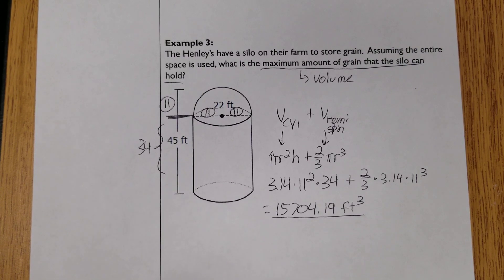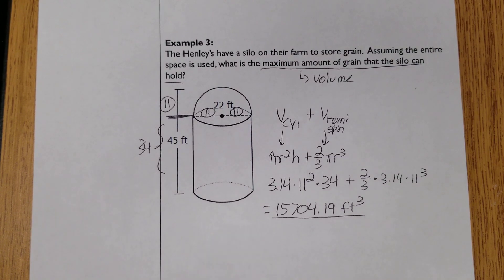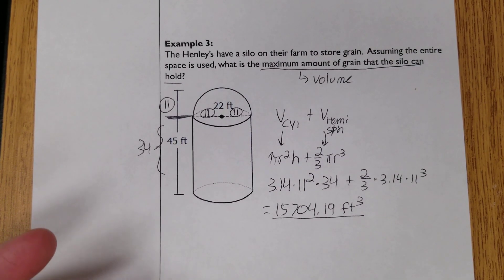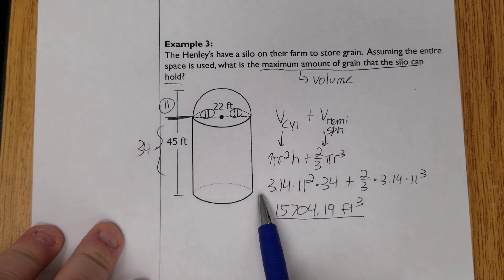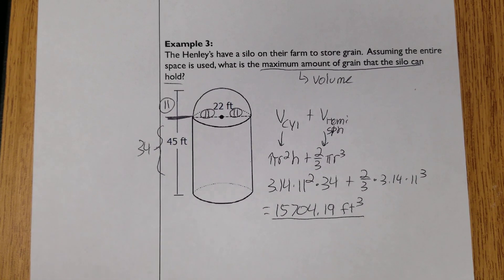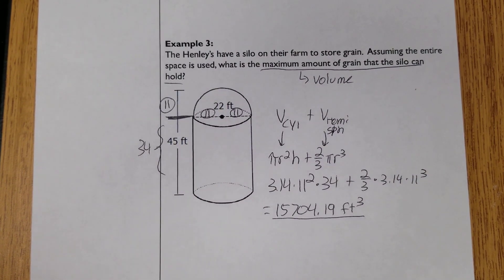That's everything for sections 11.1 through 11.4. The assignment will give you random shapes mixed together and ask you to apply the correct formula. The secret to formula problems is very literally: write down the formula, build it, then plug in the numbers and calculate. Don't try to shortcut anything. If you take the time to write the formula out, you'll do really well. If there are any questions, make sure to ask your teacher, and see everybody in the next section.